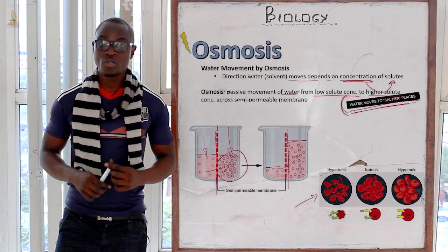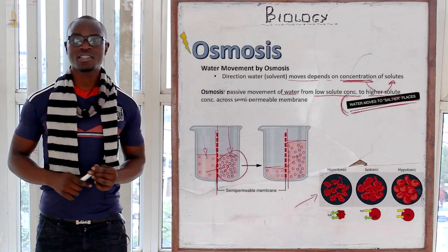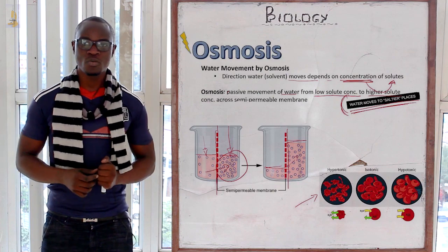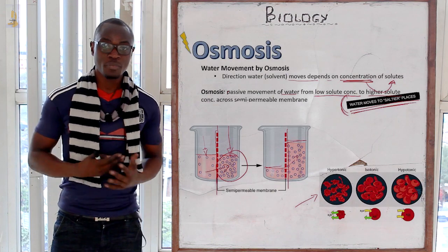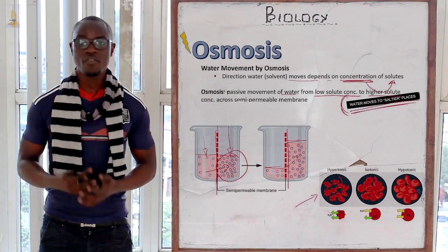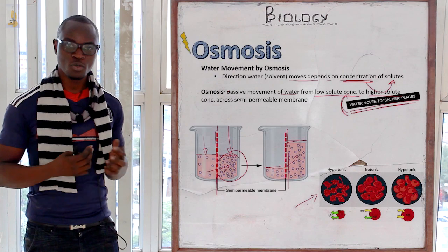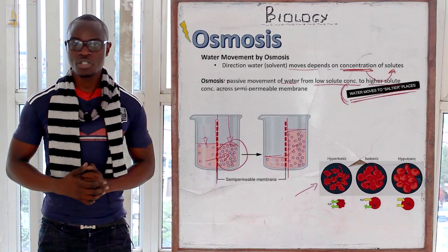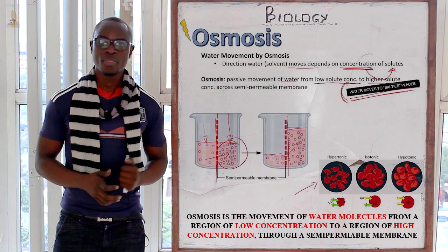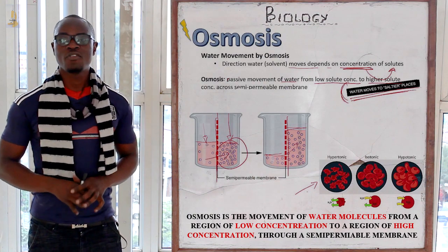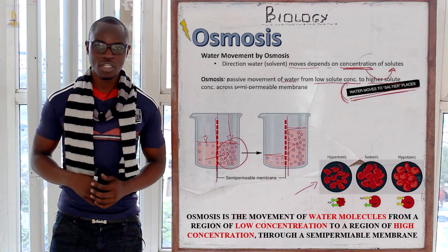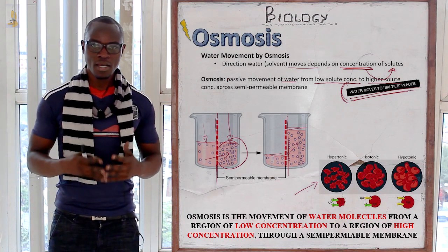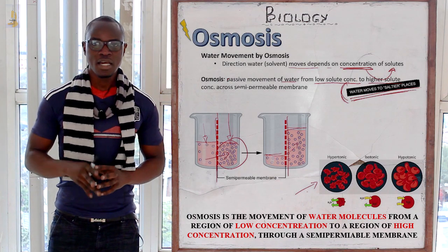Welcome again to this class where today we are going to discuss more on osmosis. Remember in the previous class we discussed the physiological processes: active transport, osmosis, and diffusion. So let's begin with osmosis and define what osmosis is. Osmosis is the movement of water molecules from a region of low concentration to a region of high concentration through a semi-permeable membrane.